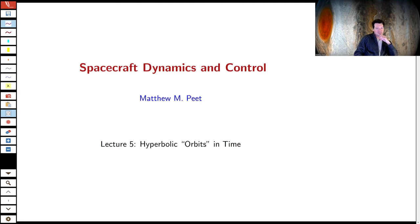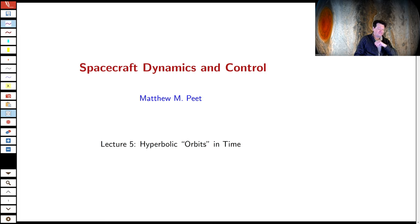Hello class, and welcome to Lecture 5. Honestly, Lecture 5 could very well have been Part C of Lecture 4 because they both deal with the same topic. The only difference is now we're considering hyperbolic orbits as opposed to elliptic orbits. However, there are several important differences, so we're putting it in a separate lecture to highlight those differences so that some of these equations don't get conflated and you don't accidentally use a hyperbolic equation for an elliptic equation.